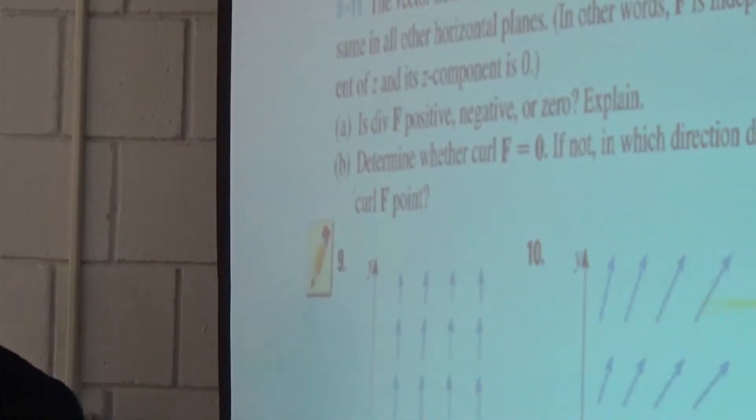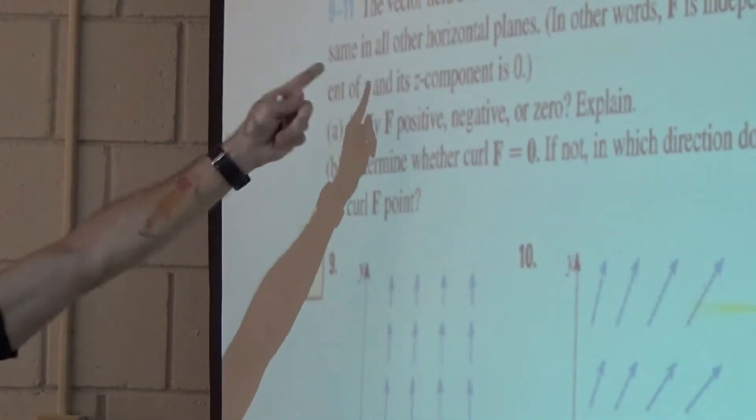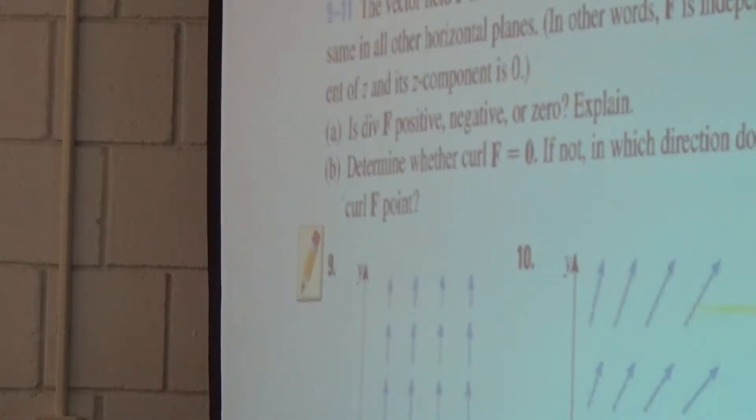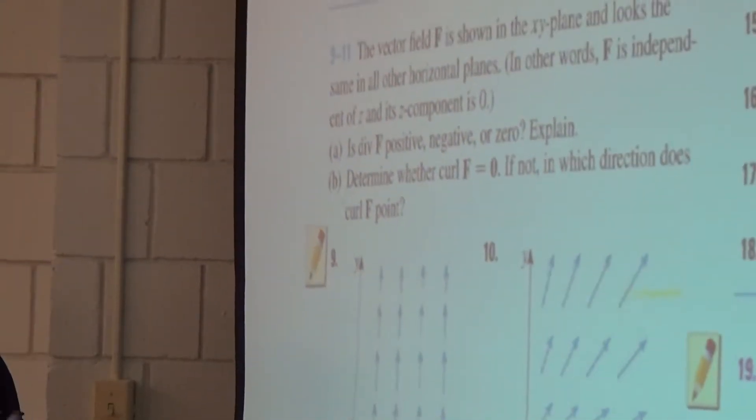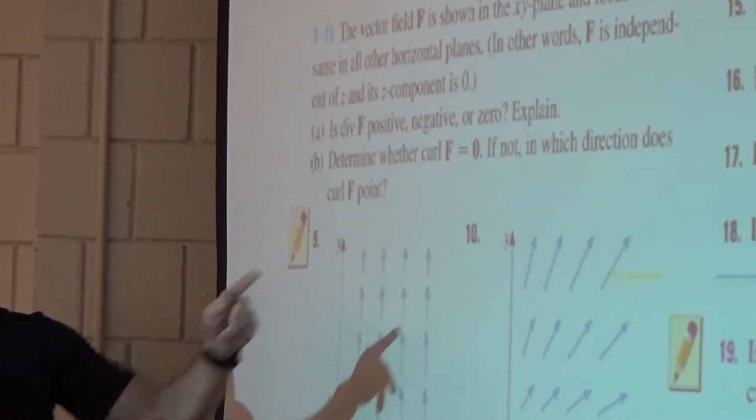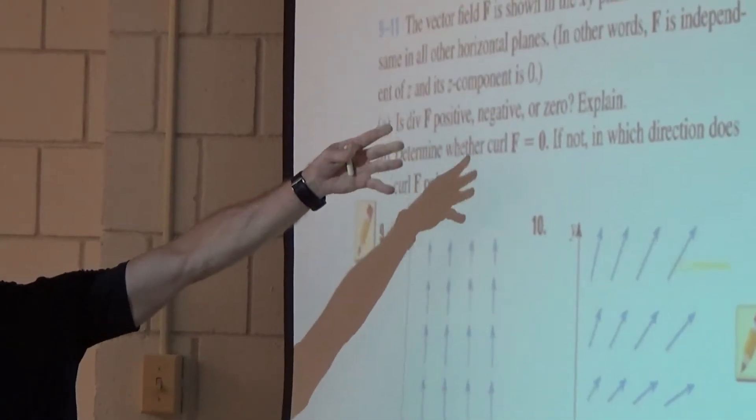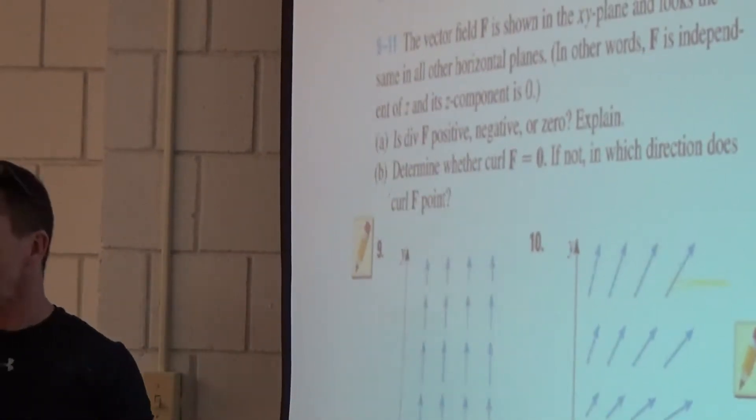It would look just like this, right? So that's important that you see that in the directions. The vector field of f is shown in the x-y plane and looks the same in all other horizontal planes. In other words, f is independent of z, and its z component is zero.